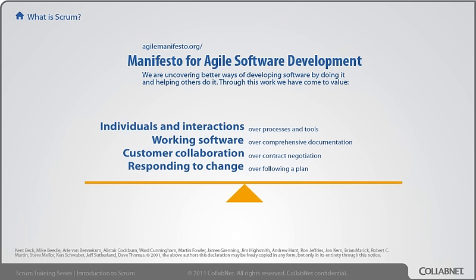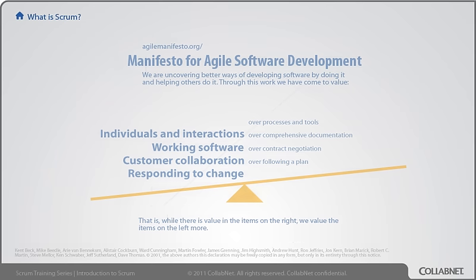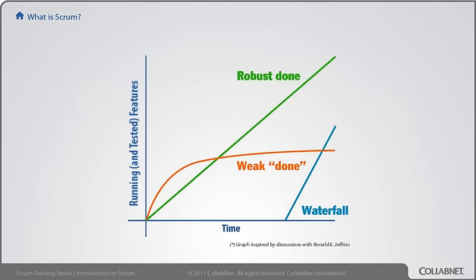We value individuals and interactions over processes and tools, working software over comprehensive documentation, customer collaboration over contract negotiation, and responding to change over following a plan. This doesn't mean we don't value the things on the right — we do value the things on the left more. The basic intent of all the Agile approaches is an early and sustainable rate of valuable feature delivery.